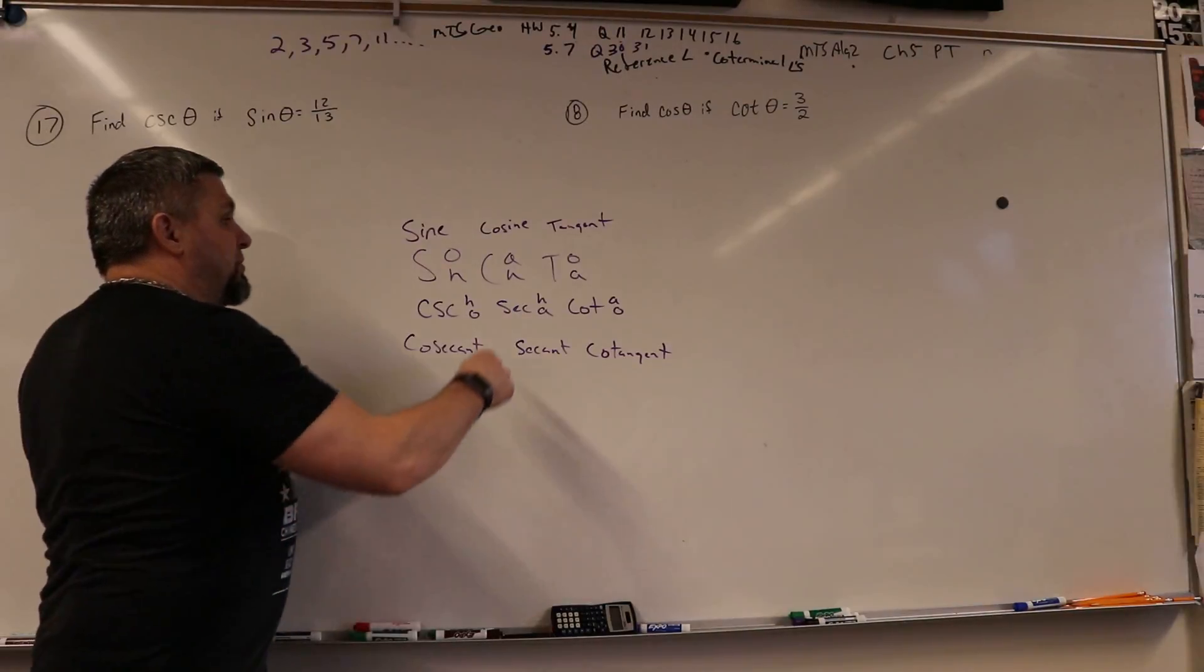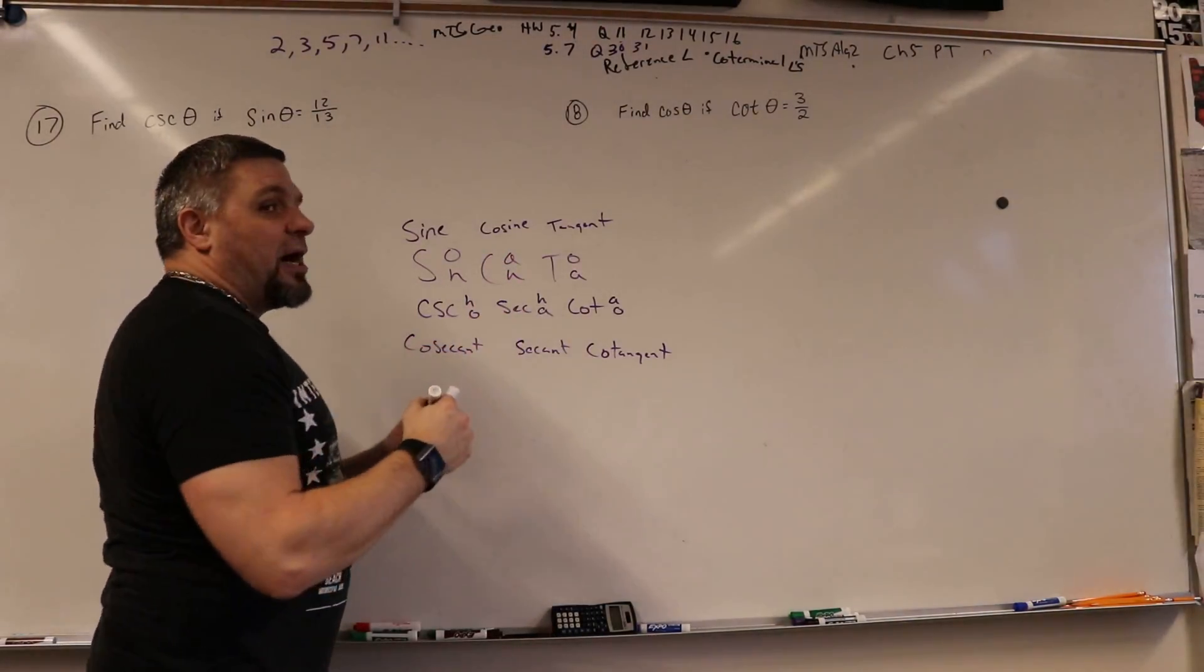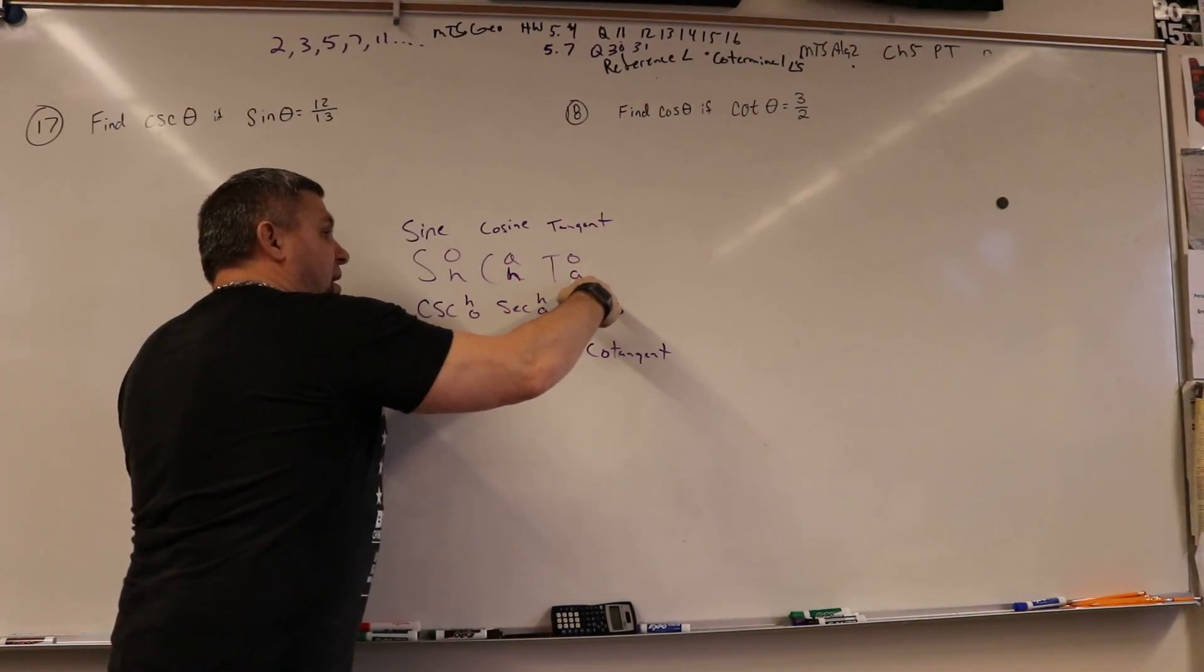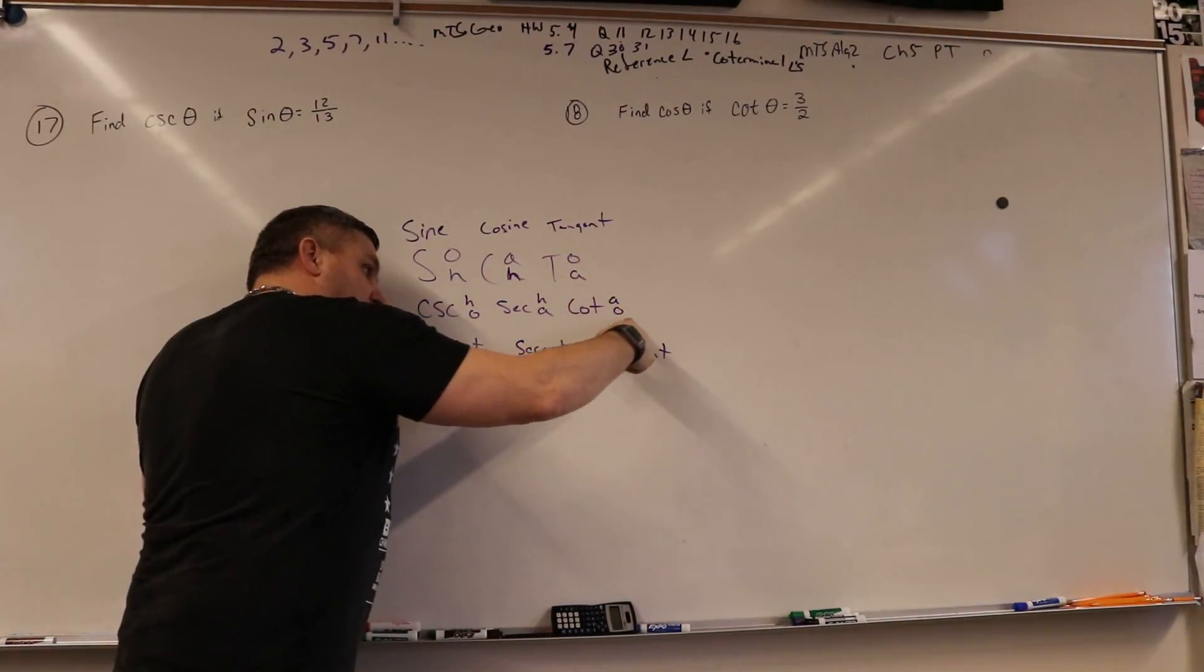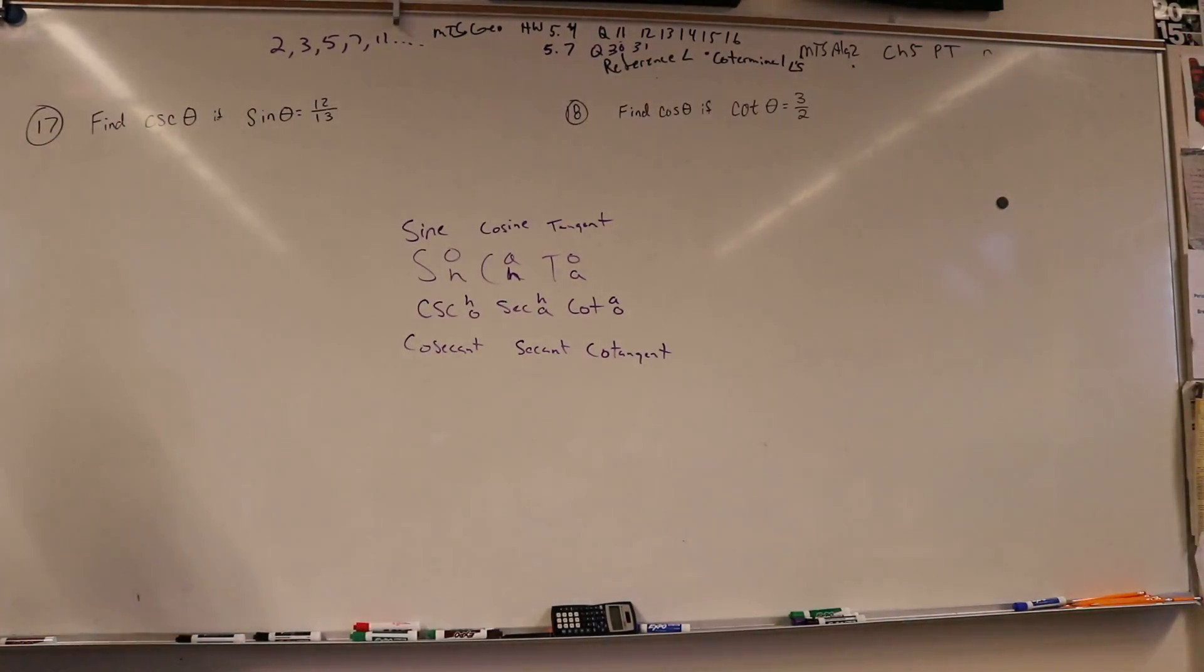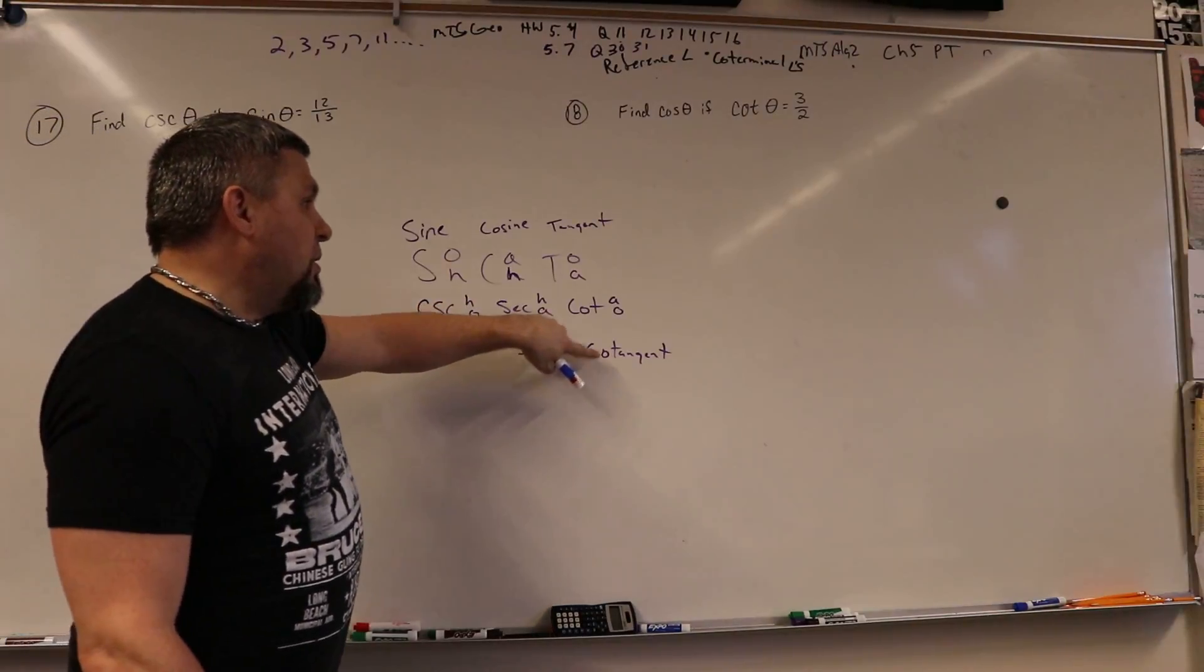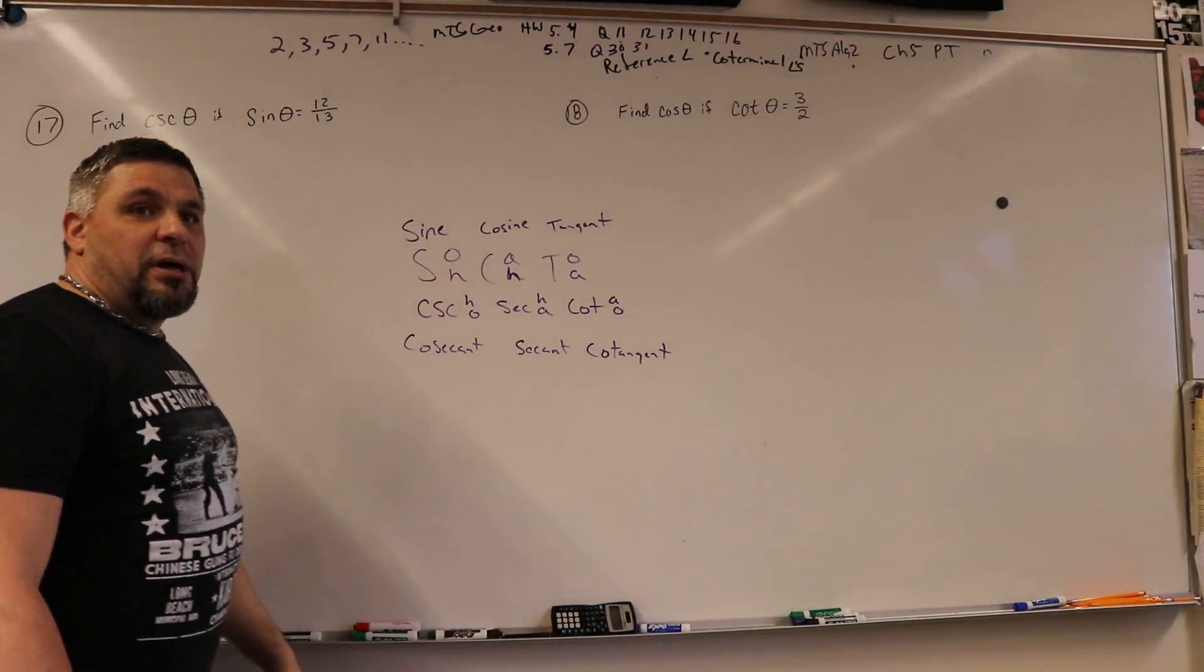Okay, so this one's hypotenuse over adjacent or this one's hypotenuse over adjacent, right? So that one's hypotenuse over adjacent, this one's adjacent over hypotenuse, and this one's adjacent over opposite. Okay, so sine, so co, no co, co, no co, co, no co. Does that help? A little bit.